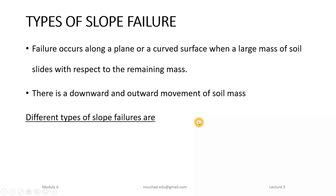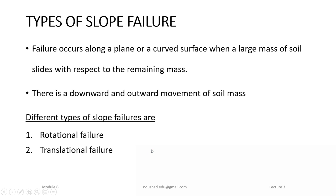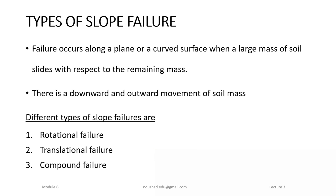The different types of slope failure are: first, rotational failure; second, translational failure; and third, compound failure. These three types cover the main modes of slope failure.